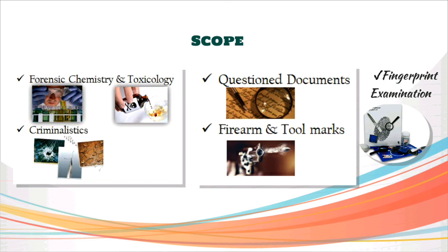Next, coming to firearm and tool marks. The study of firearms is called forensic ballistics. We study the mechanism of a particular firearm and the effects it causes on the target, and how bullets are expelled. Tool mark examination involves studying the unique mark left by a particular tool. In cases like burglary or robbery, we can link the mark to the tool and the tool to the owner — a suspect — to identify the actual culprit.